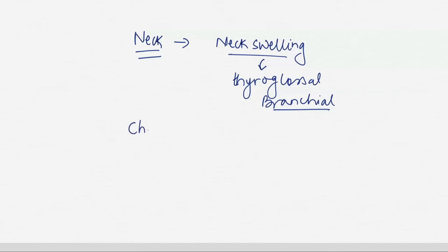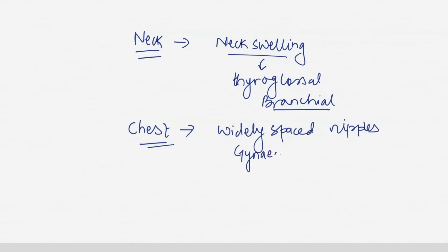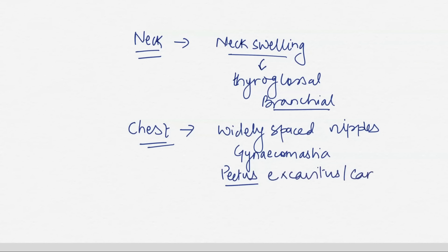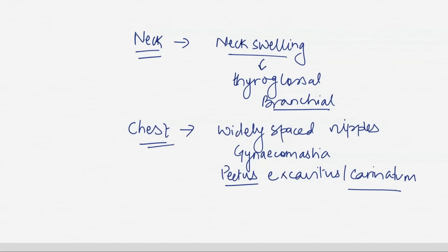In the chest, you look for abnormalities such as widely spaced nipples, gynaecomastia (which can be normal in neonates), and chest wall deformities like pectus excavatum or pectus carinatum. Give an overview first — 'I'll examine the chest region looking for any abnormalities' — then list the specific things you are expecting. Some people examine the arms before the chest; others go chest first then arms — either order is fine as long as you are systematic.